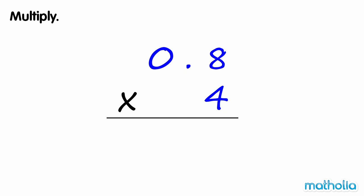Multiply. We need to find 0.8 times 4. Start by multiplying the tenths. 4 times 8 tenths equals 32 tenths. Regroup 32 tenths into 2 tenths and 3 ones.